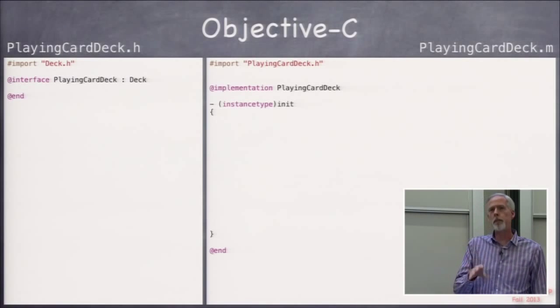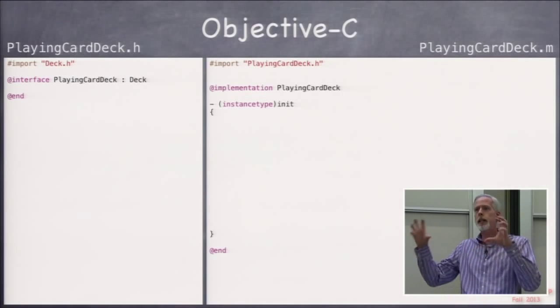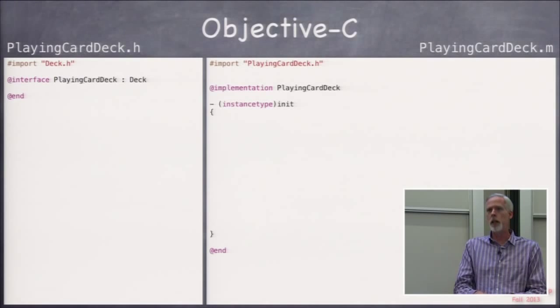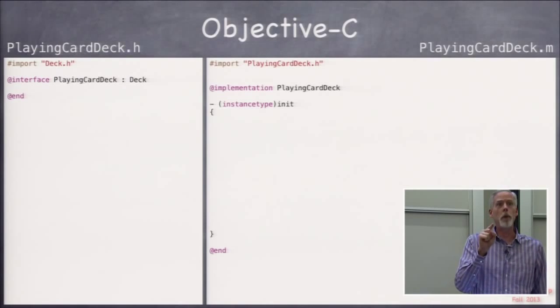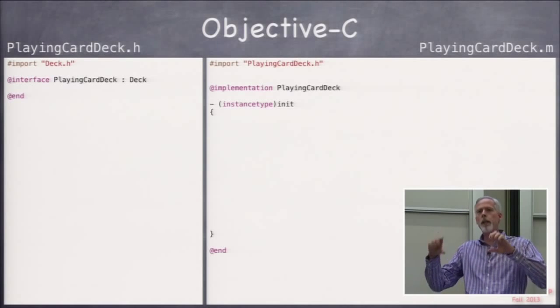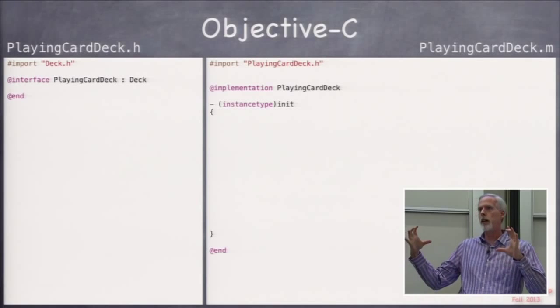So this is the same init, same kind of method, that when we created that array, the mutable array, we said NSMutableArray alloc init. So someone is going to call this playing card deck init method, namely you and your homework, are going to call this by doing playing card deck alloc, and then on the outside init. And that's how you're going to create a playing card deck.